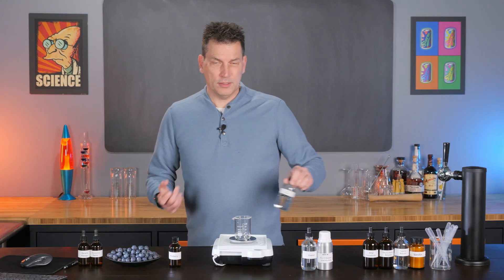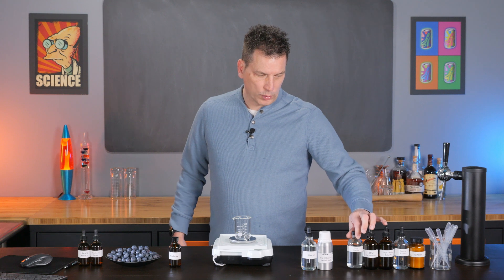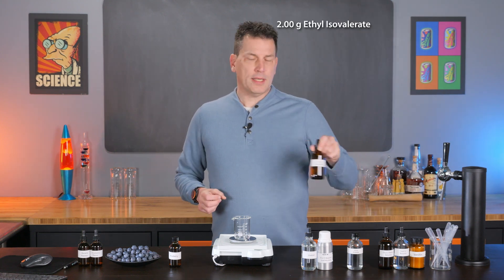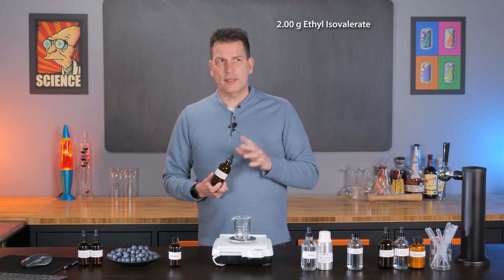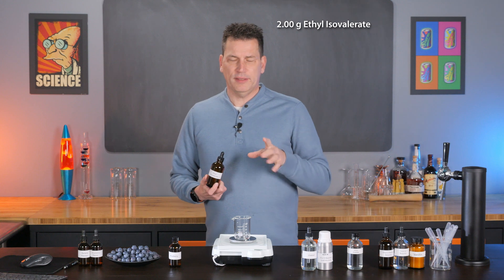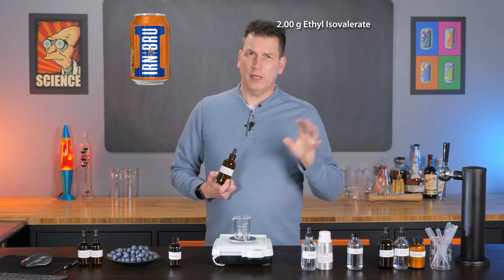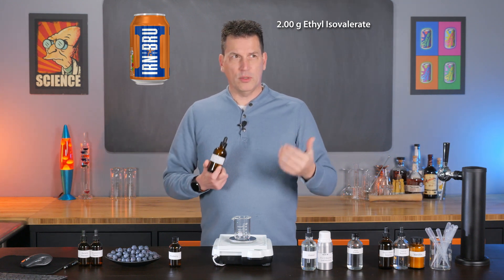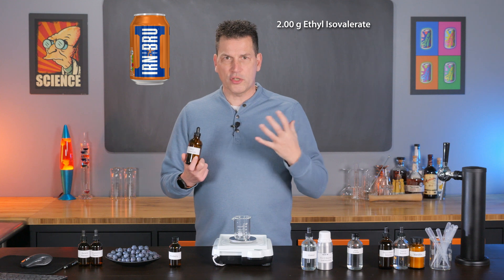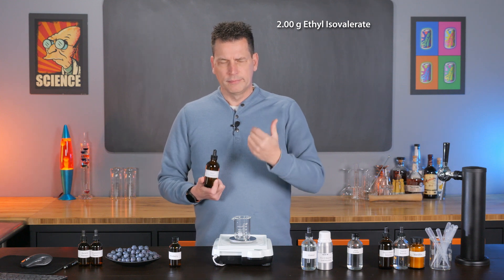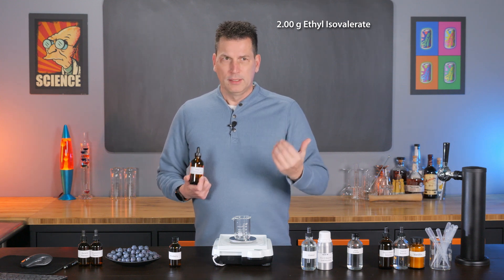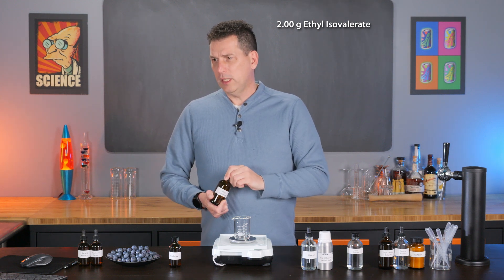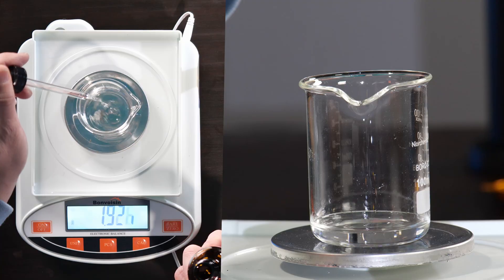The next ingredient is ethyl isovalerate. You'll find this in apple flavors but also in Irn-Bru — it's one of the characteristic flavors of that Scottish soda that really makes it stand out. We need two grams of this.